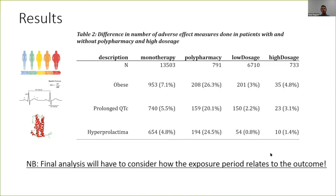This is ongoing work and we are currently incorporating the exposure period, looking at how often we see mentions of these adverse side effects right after a period of either polypharmacy or high dosage. In conclusion, it is possible to employ natural language processing to extract dose and duration of specific antipsychotics and periods of polypharmacy from electronic health records where this information is not otherwise available — at this Trust there is no electronic prescribing, so medication information can only be obtained from free text. Antipsychotic polypharmacy and high-dose antipsychotic treatment should be carefully managed with additional attention towards measures of physical health.